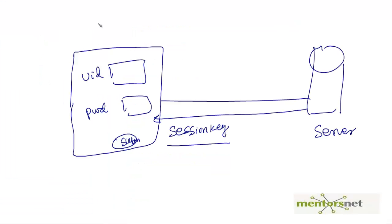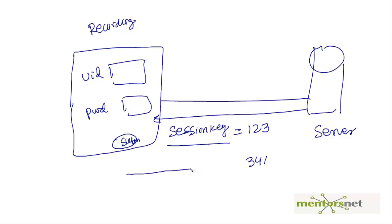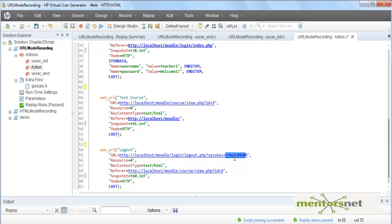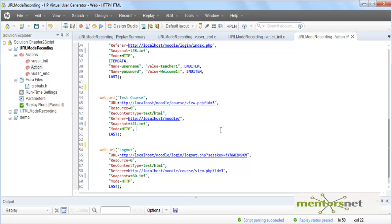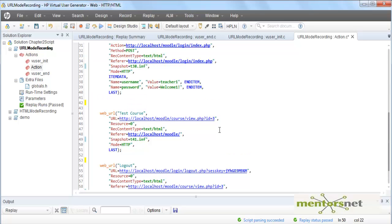So if I login during recording, I get a session key — let's say that session key is 1-2-3. When I replay the script I will login again and therefore get a different session key — let's say 3-4-1. That means during replay I am creating a new session, and whatever session ID is generated, I must pass that in the logout call, otherwise it will not log you out. That is why logout is failing — we are not passing the right session key, which was generated during record time.